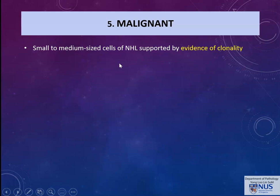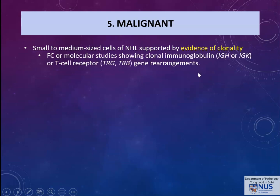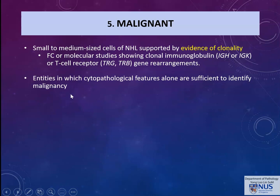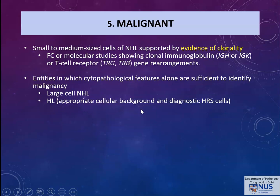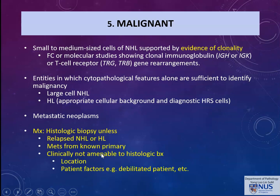The final category is malignant: small to medium-sized cells of non-Hodgkin lymphoma supported by evidence of clonality from flow cytometry or molecular studies, or entities where cytopathological features alone are sufficient — such as large cell non-Hodgkin lymphoma or Hodgkin lymphoma with diagnostic cells — as well as metastatic malignancies. Management is histologic biopsy unless there is a known clinical scenario of lymphoid or non-lymphoid malignancy, or if the patient is not amenable to histologic biopsy due to the location of the nodal mass or other patient factors.